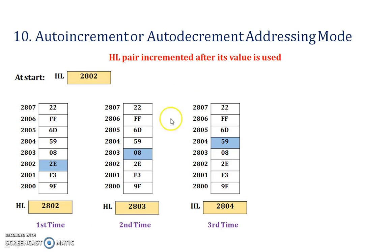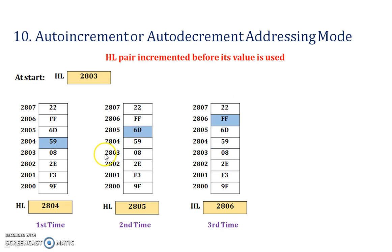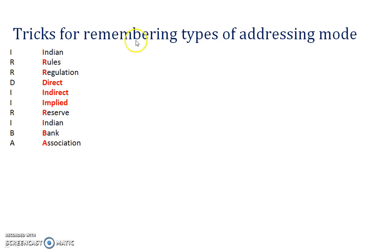So after increment means you first increment the address, then find the data — this is called after-increment. For before-increment: the starting address is 2804. Whenever you want to increase the address, you first take data from 2804 and then increase the address — this is called before-increment. The same logic applies for auto-decrement.